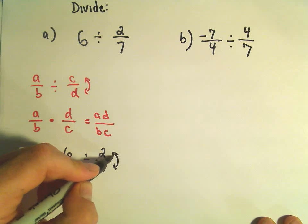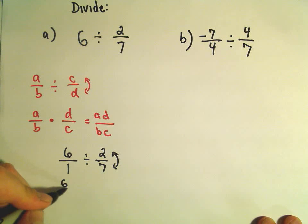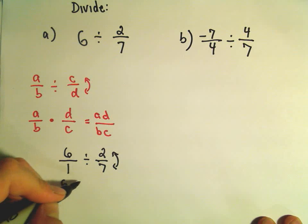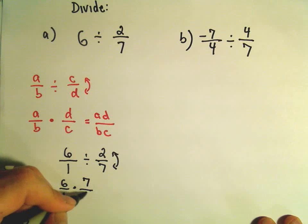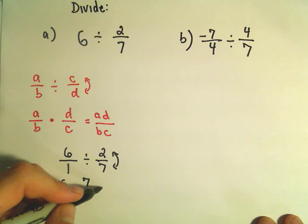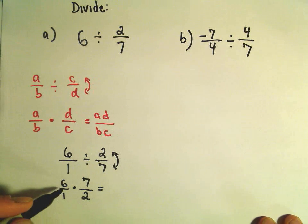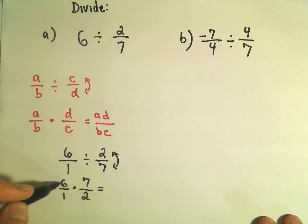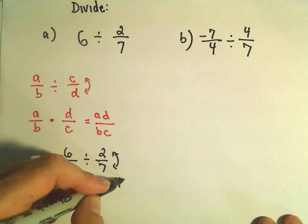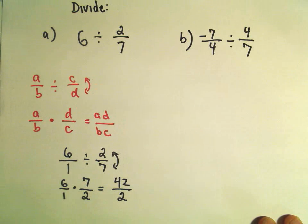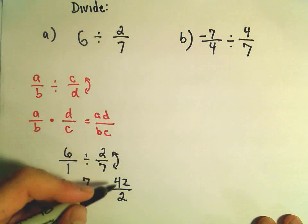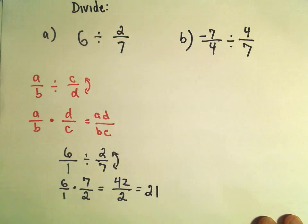I'm going to flip the second fraction and make this 6 over 1 times 7 over 2. And we could do this, we could multiply. We could either cancel first, but maybe we just multiply. 6 times 7 is 42 divided by 2. And 42 divided by 2 is 21.